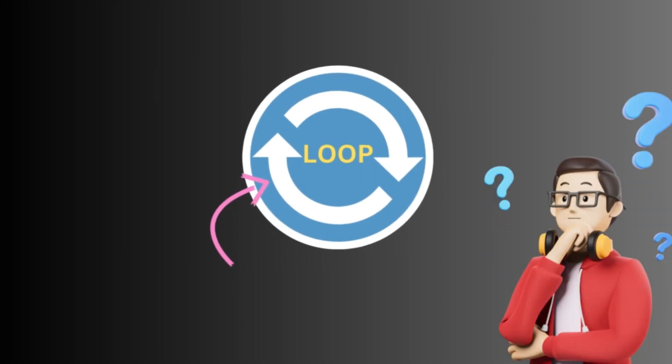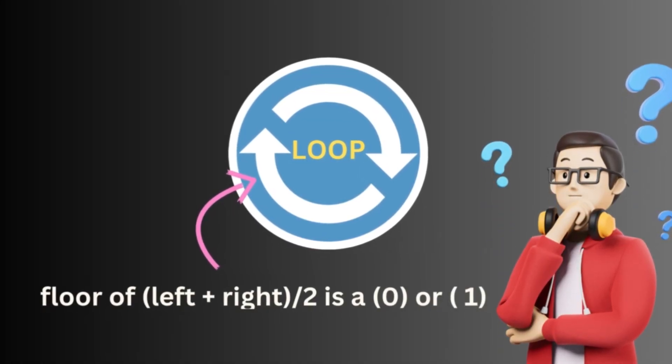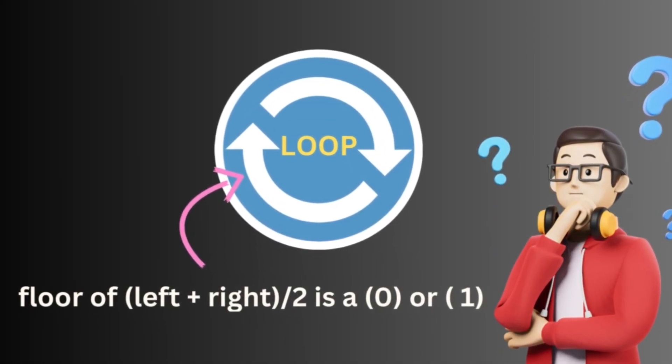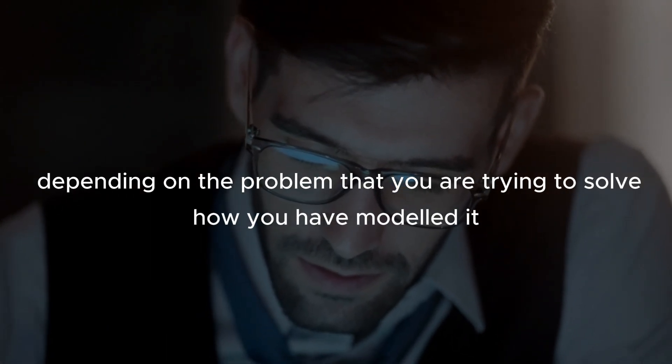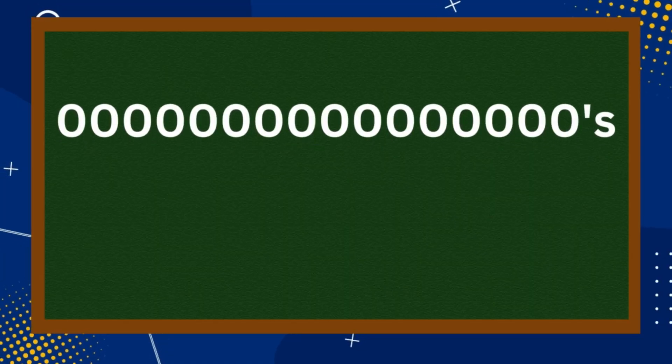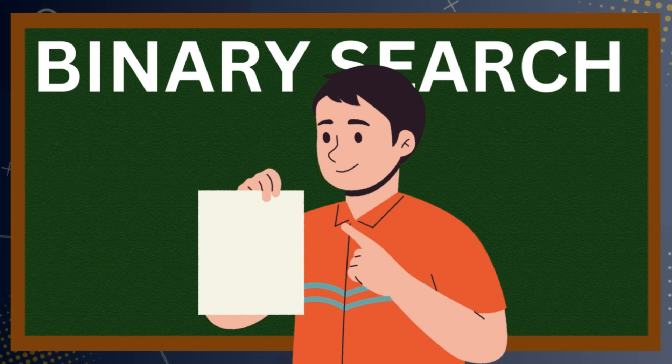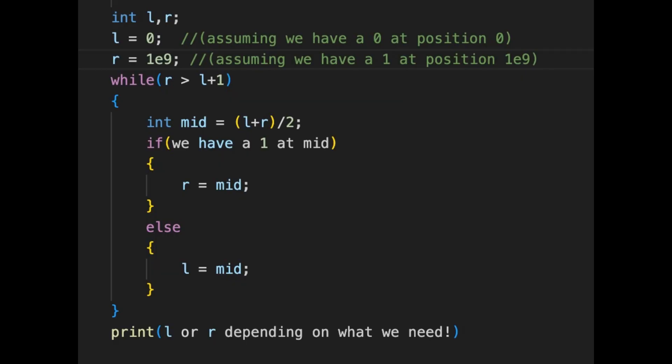Inside the loop, all we need to check is whether the position at the middle, i.e. floor of left plus right by 2, is a 0 or a 1. Now, this check can be done depending on the problem that you are trying to solve and how you have modeled it and defined the 0s and the 1s. So, if it is a 0, we can update left to be equal to middle. Otherwise, we can update right to be equal to middle. And we are done!